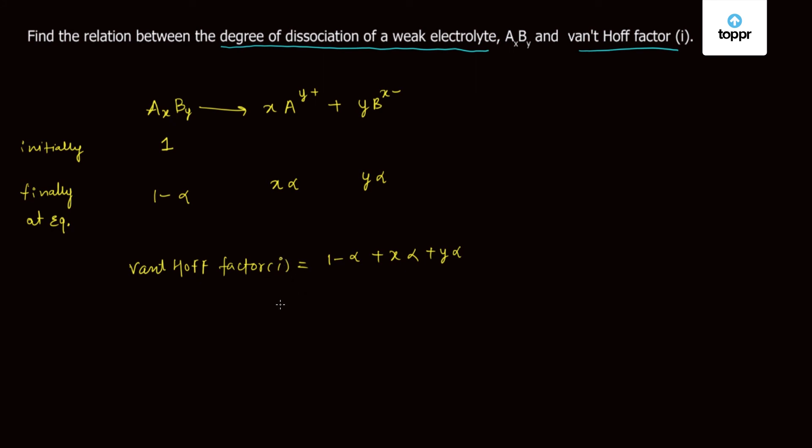So i is equal to 1 plus alpha times (x plus y minus 1). This is the relation between the van't Hoff factor and the degree of dissociation alpha.